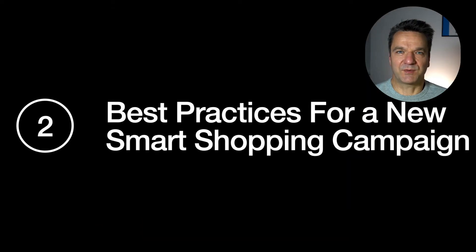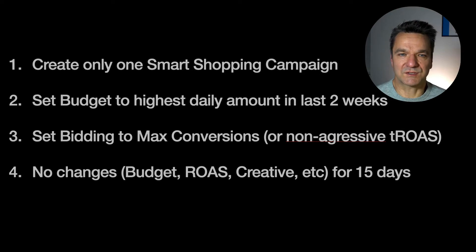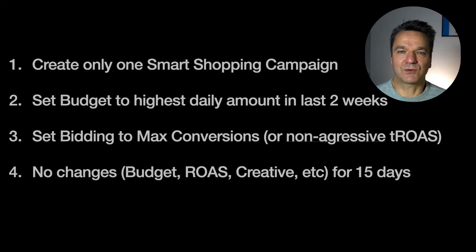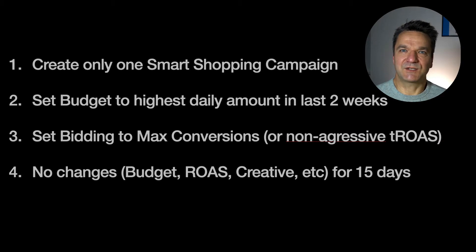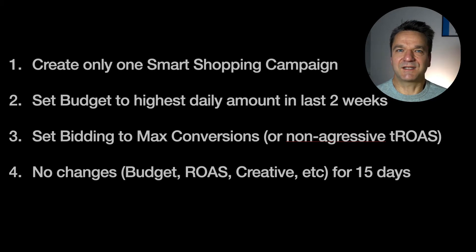The rules for starting Smart Shopping campaigns are: create only one Smart Shopping campaign, unless you have groups with different ROAS goals for different products — then consider segmenting Smart Shopping campaigns based on ROAS. Set the budget to the highest daily amount in the last two weeks to give Smart Shopping room for training and learning. Set bidding to max conversions. Don't use target ROAS unless you really know your historical target ROAS — in that case set a slightly less aggressive target ROAS. And very importantly, don't make any changes in the first 15 days or until the campaign exits the learning phase — no budget changes, no target changes, no changes to creative, and so forth.